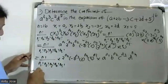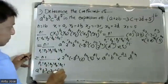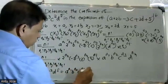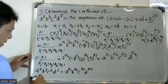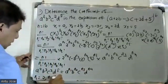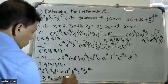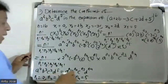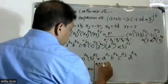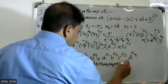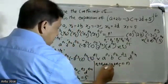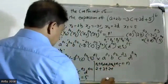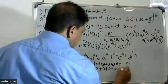Therefore, matching a cubed, b cubed, c squared, d raised to 5 with a raised to n1, b raised to n2, c raised to n3, d raised to n4: n1 equals 3, n2 equals 2, n3 equals 2, n4 equals 5. Since n1 + n2 + n3 + n4 + n5 equals n equals 16: 3 + 2 + 2 + 5 + n5 equals 16, so n5 equals 4.